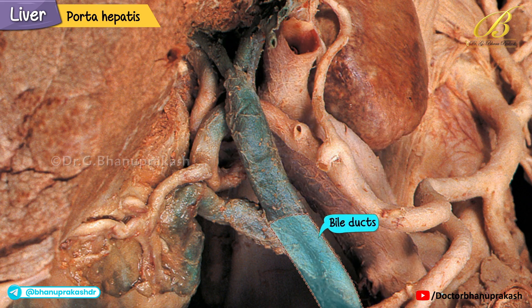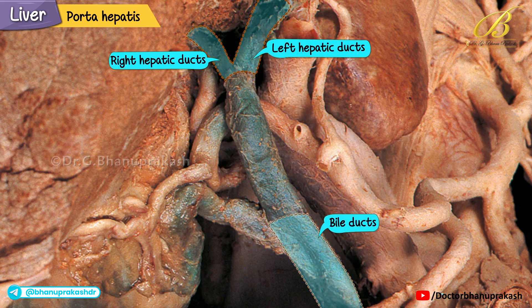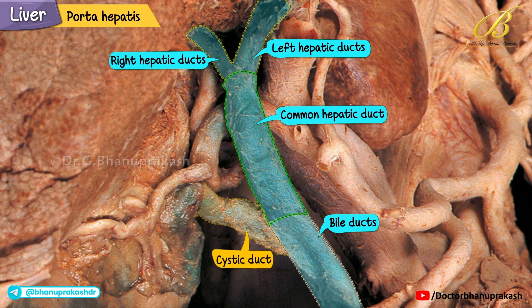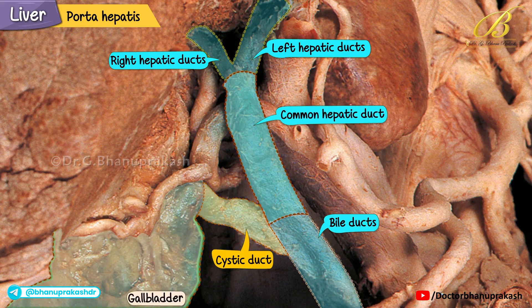Bile ducts are also formed in this region. The right and left hepatic ducts join to form the common hepatic duct, and then the cystic duct from the gallbladder joins the common hepatic duct to form the bile duct.